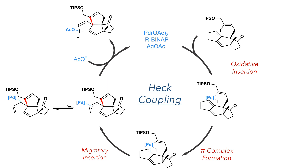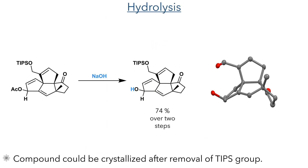The new carbon-carbon bond is exclusively formed on the top face of the molecule, as the reaction is directed by the stereochemistry of the group tethered to the position alpha to the ketone. Following this reaction, the acetate was hydrolyzed using sodium hydroxide, furnishing the product with a 74% yield over two steps.